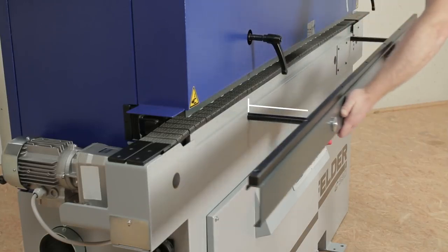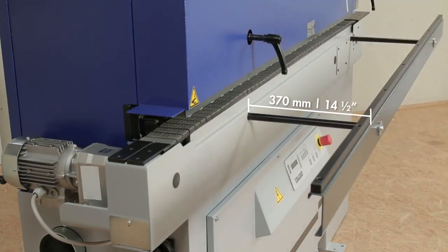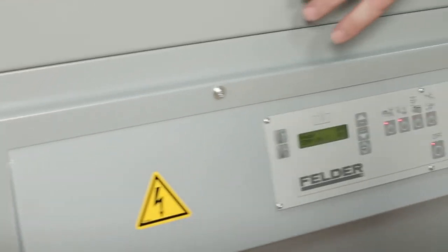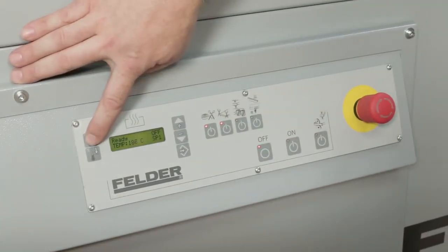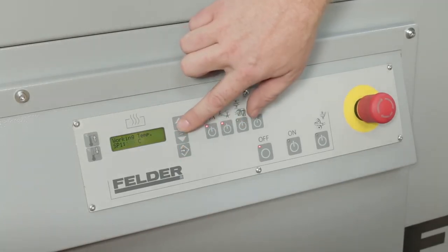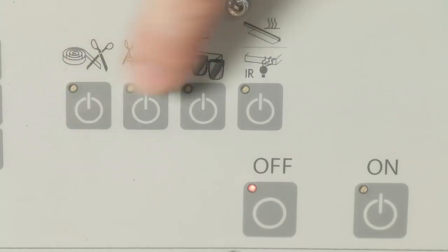The extendable frame makes for optimum support with wide workpieces. The G330 is controlled via a user-friendly front control panel. The units can be individually activated.